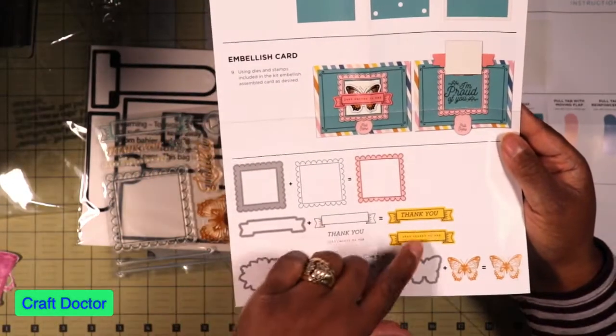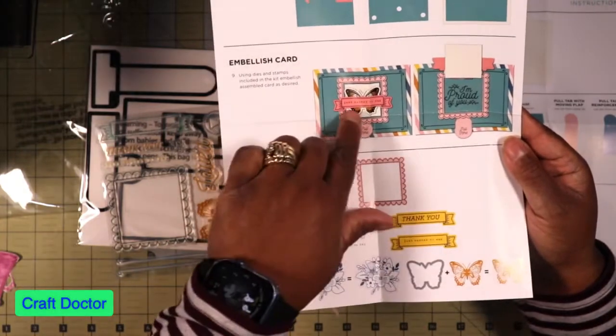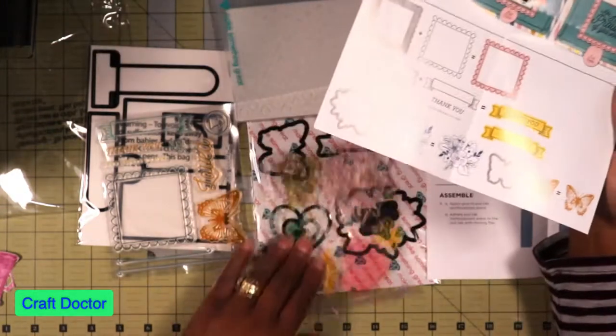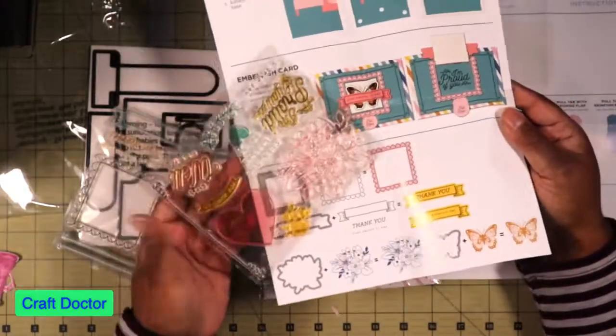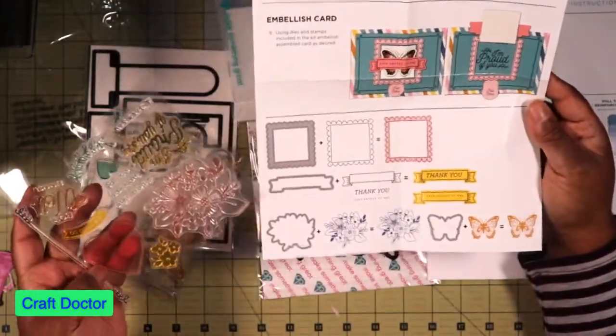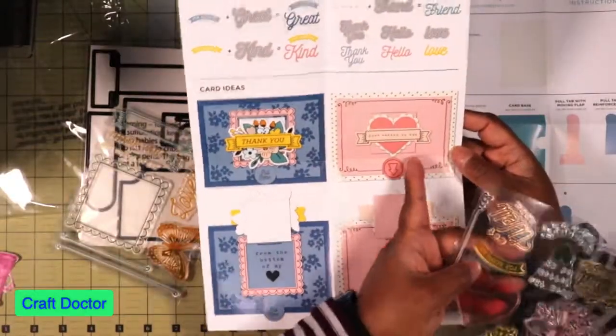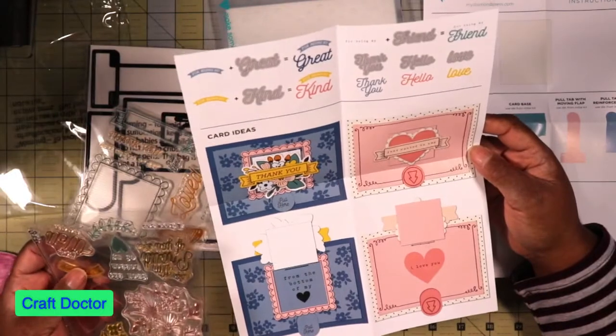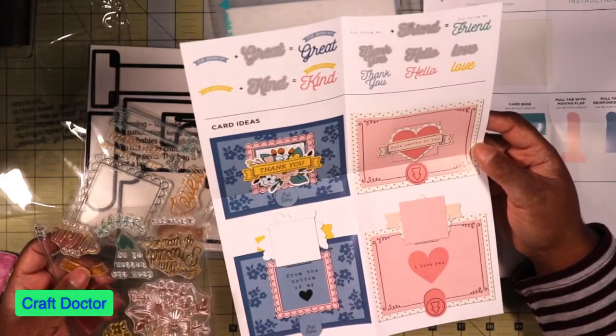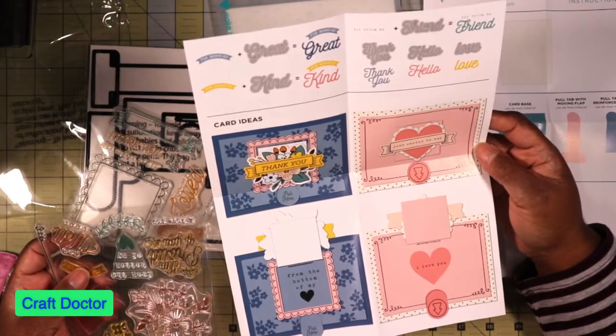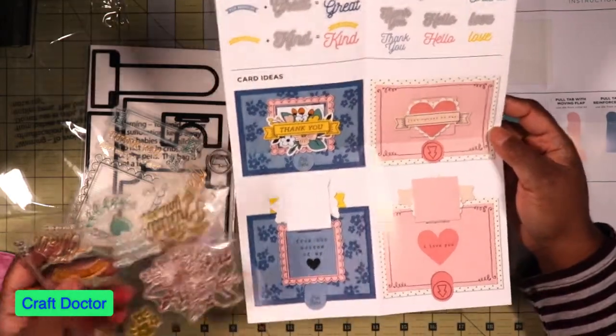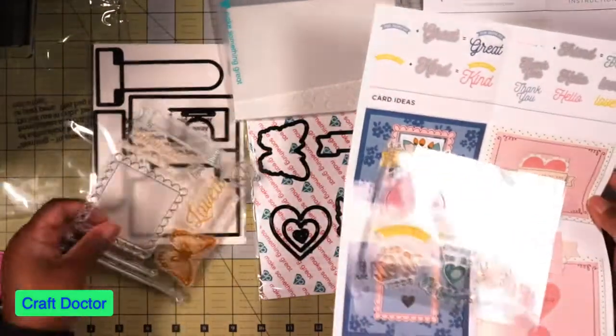I like you to see them on the page because you can see them clearer - these are the stamps that it came with. This is the die, the stamp, and it makes this little frame which you can see here. It has the butterfly and the flowers. It has a solid heart also and then it says for being so great, for being so kind, thank you, friend, hello, and love. That's what these stamps say.